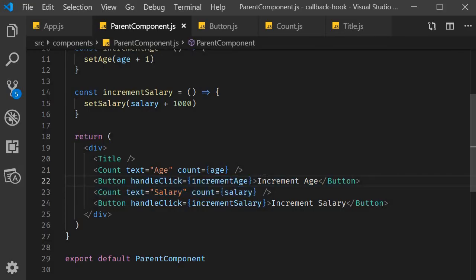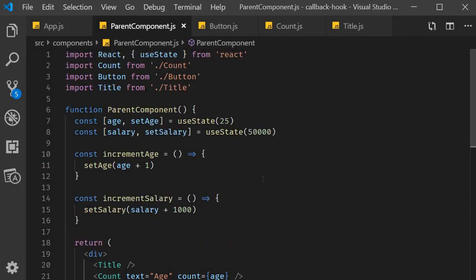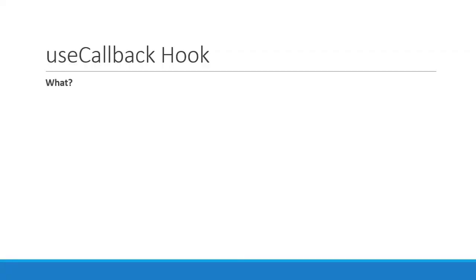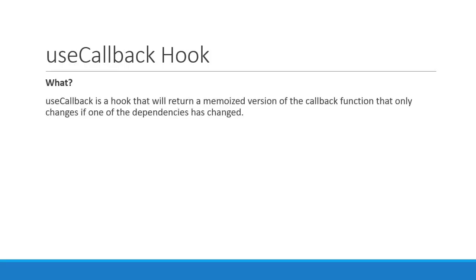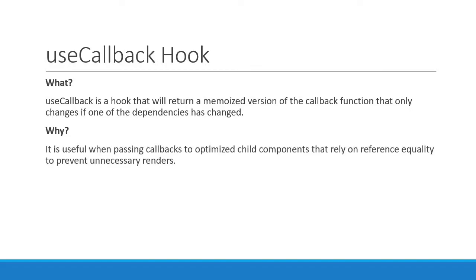So how do we fix this? How do we tell React that there is no need to create a new incrementSalary function when we update the age? The answer is the useCallback hook. useCallback is a hook that will return a memoized version of the callback function that only changes if one of the dependencies has changed. In our example, the useCallback hook will cache the incrementSalary function and return that if salary is not incremented. It is useful when passing callbacks to optimized child components that rely on reference equality to prevent unnecessary renders.